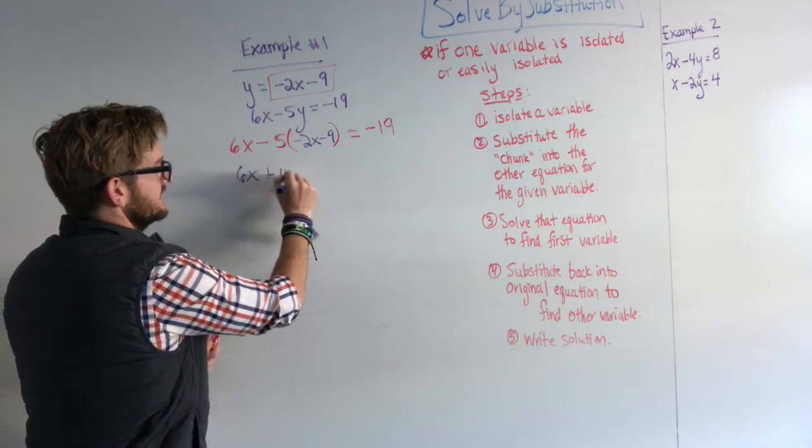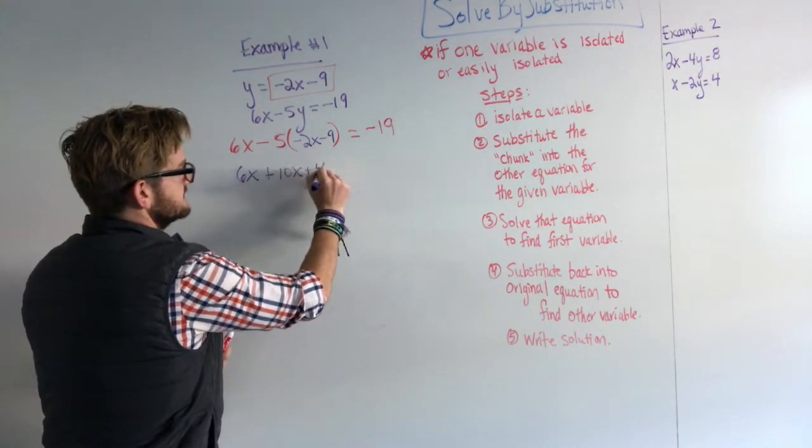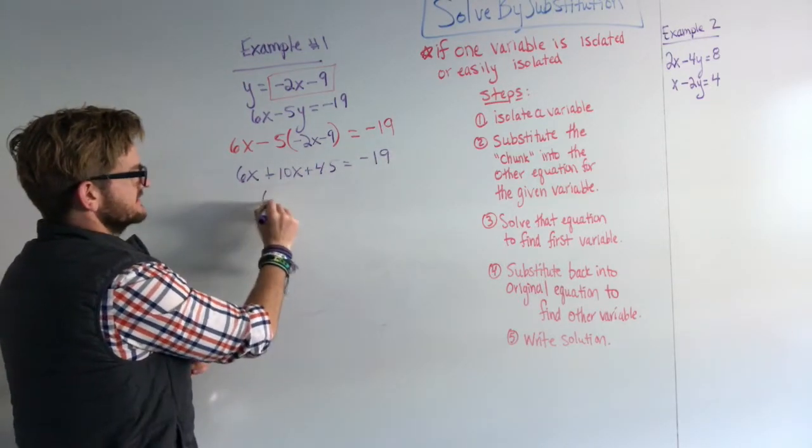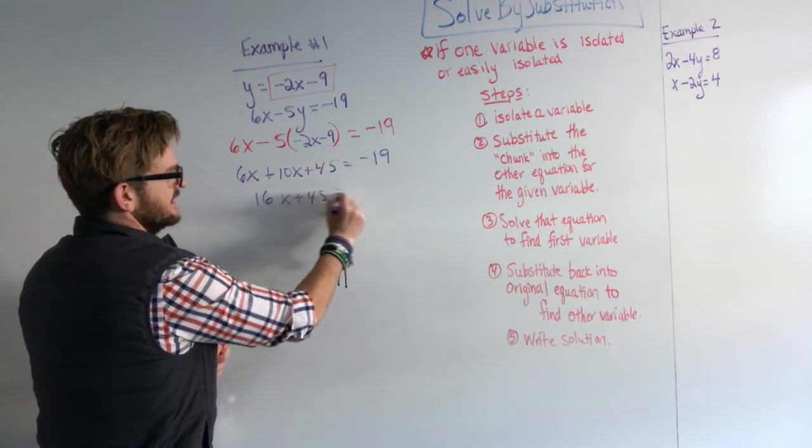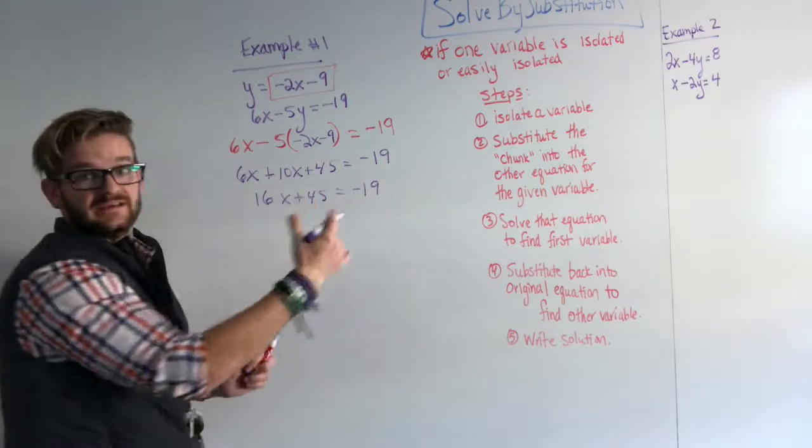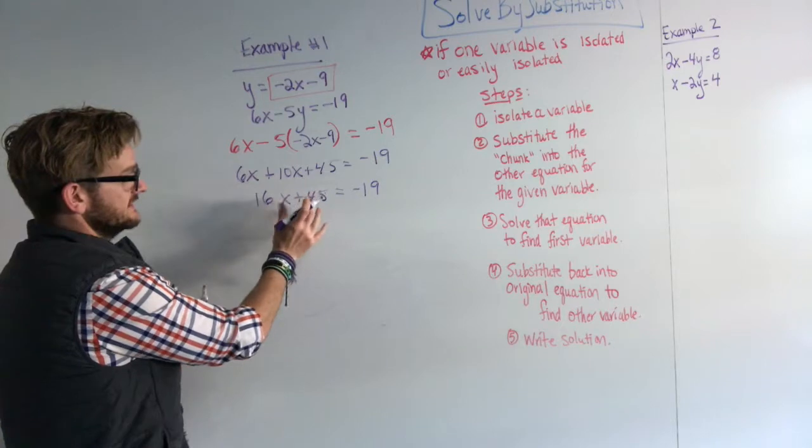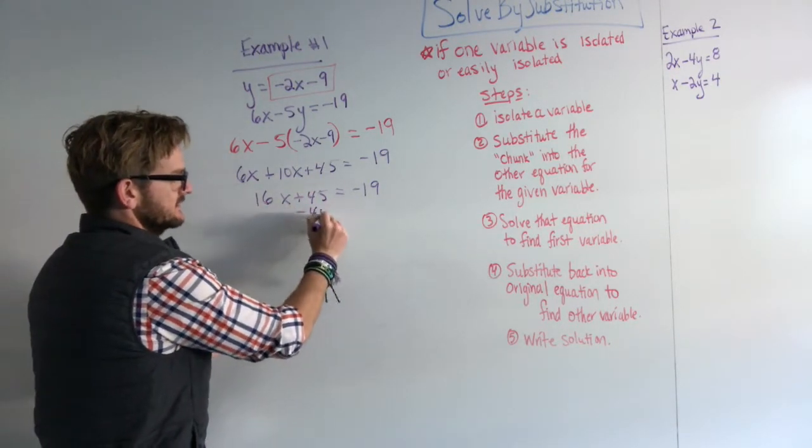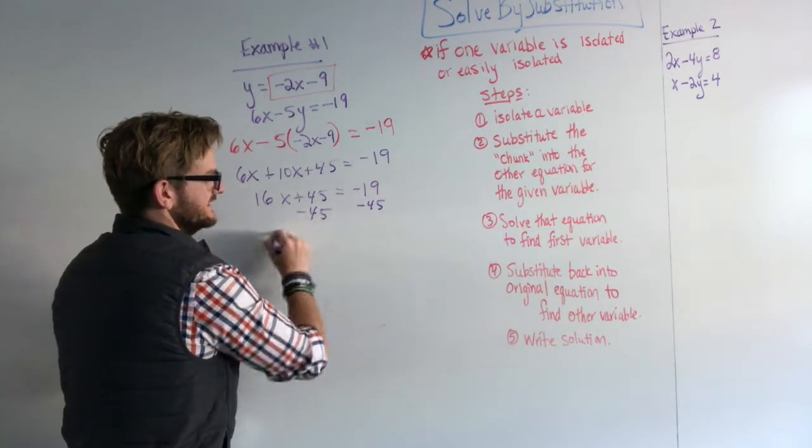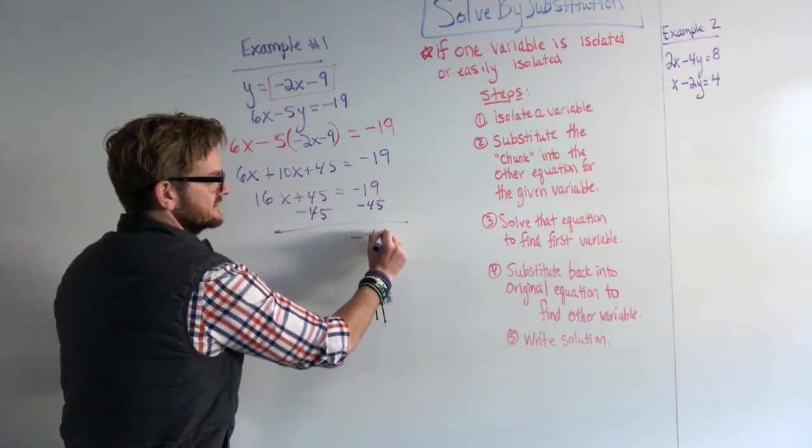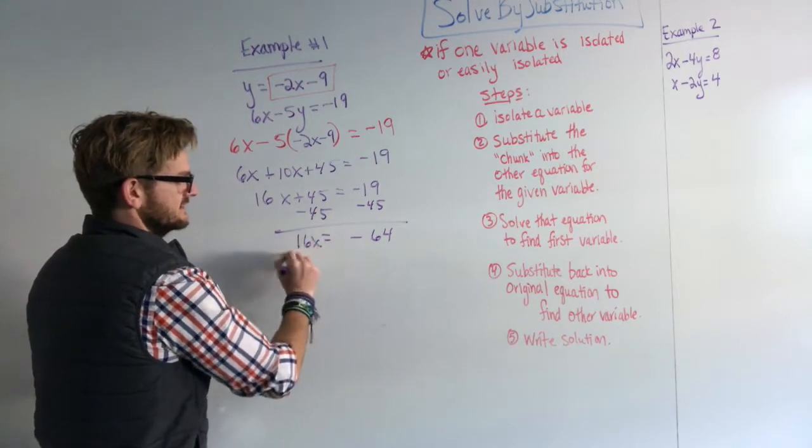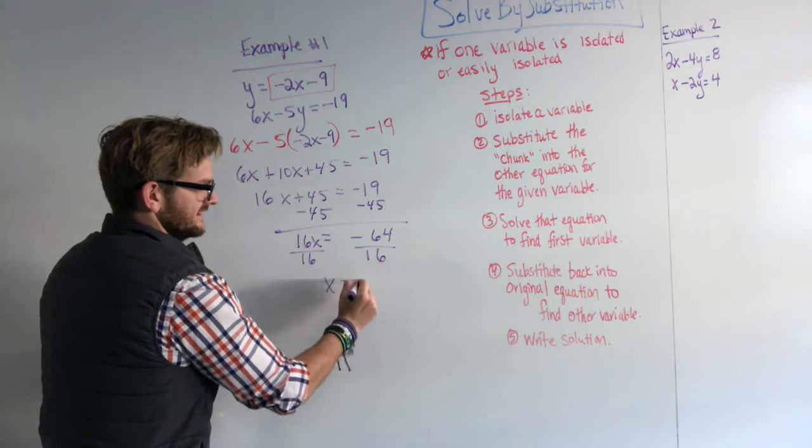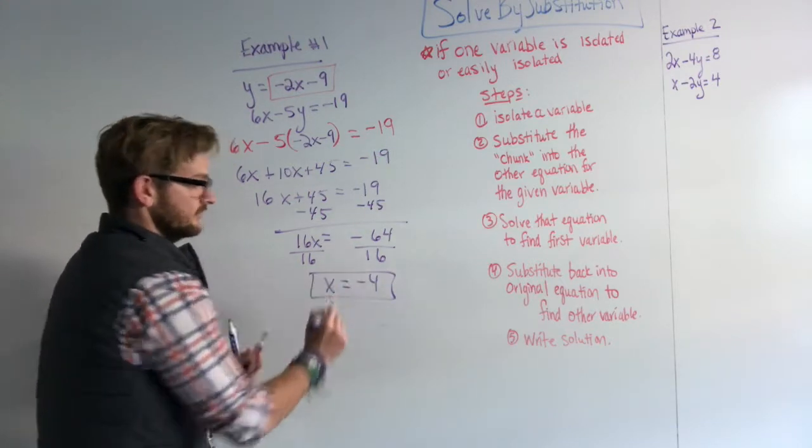I'm going to distribute the negative 5. I'm going to combine and condense over here, so 16x. And then I'm going to work everything back to one side that does not have an x and everything that has the x to one side. So 16x is going to stay. I'm going to subtract 45. I'm going to have negative 64 is equal to 16x. Divide both sides by 16. And x is negative 4.